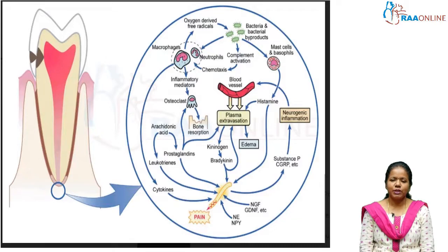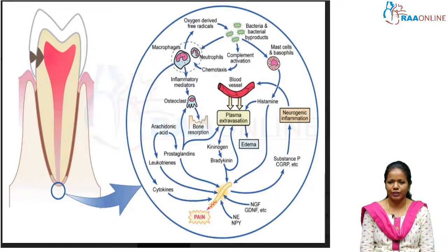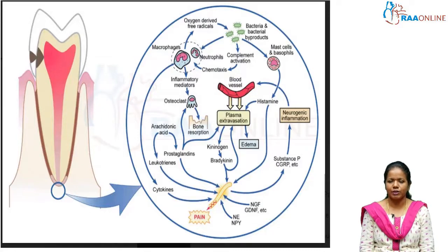This picture depicts how infection triggers inflammation. When bacteria and bacterial byproducts enter the tooth tissue, there is a cellular response and vascular response. The cellular response is triggered by attraction of neutrophils and macrophages to the site of inflammation, along with complement activation resulting in chemotaxis. Mast cells and basophils also act during the inflammatory response.